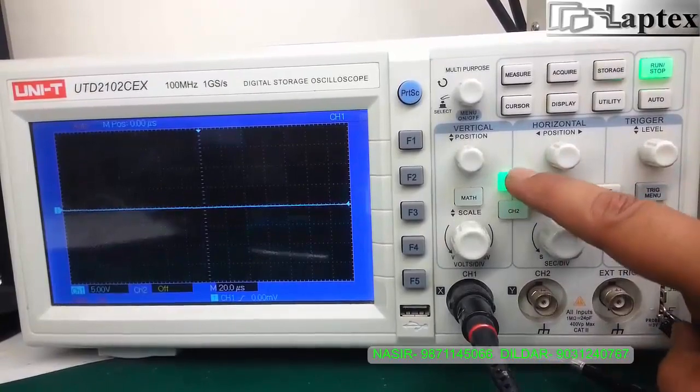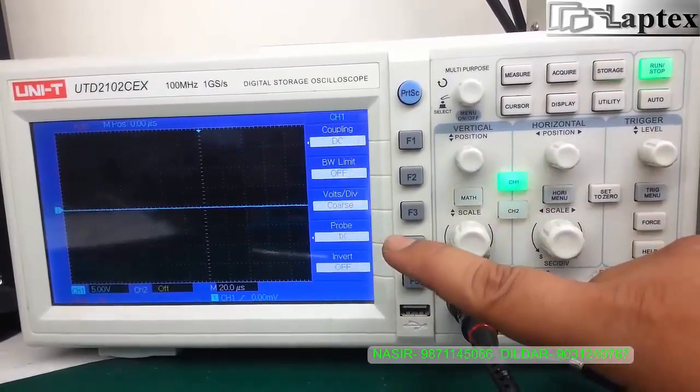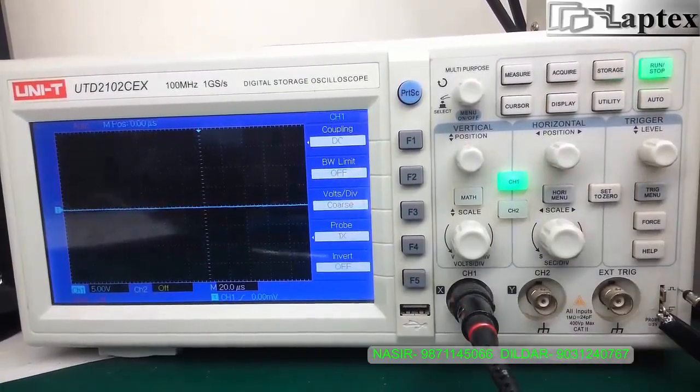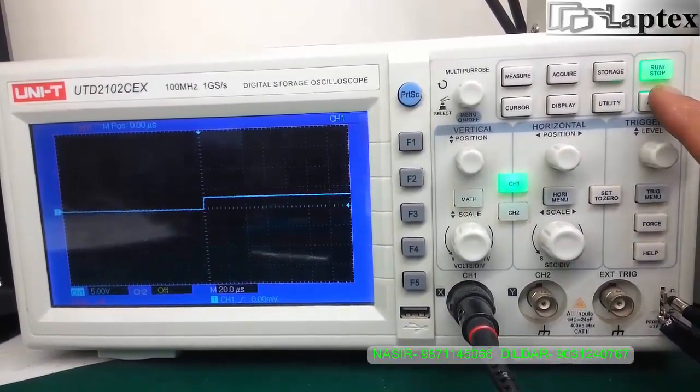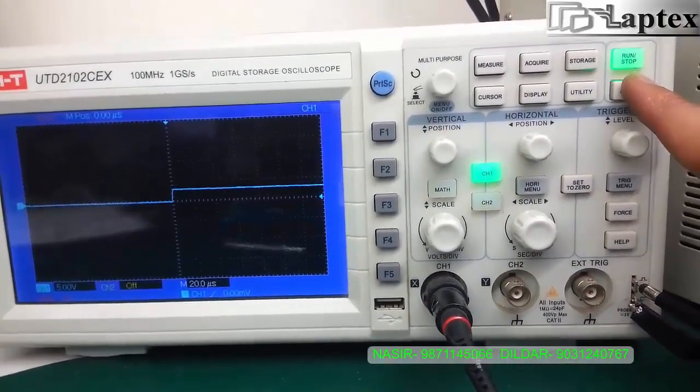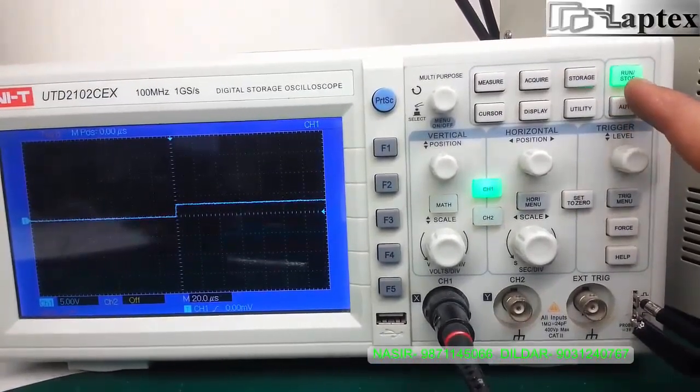Now, going to channel 1 setting, you can see we can select the probe as x1 and x10. After that, put that probe on the square wave point and then press auto.